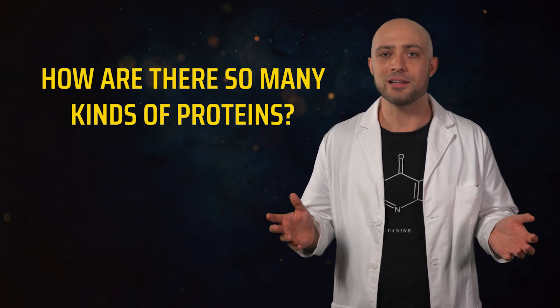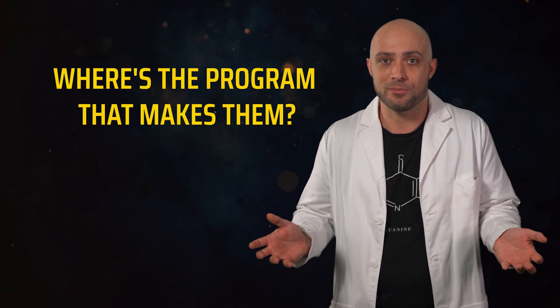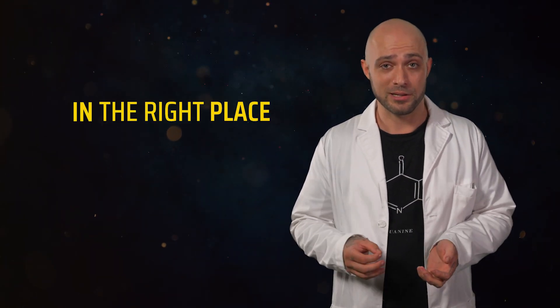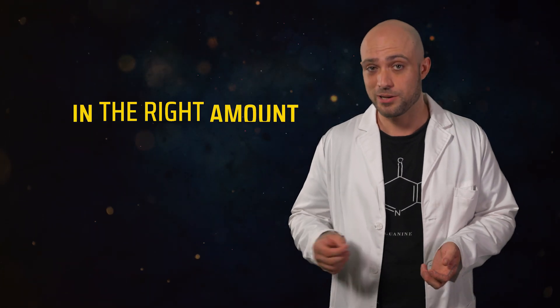Because proteins require the equivalent of a computer program to even make them. But how are there so many kinds of proteins? And where's the program that makes them? Where's that data stored? How can your body be keeping track of the almost 30,000 proteins that make up the human body, and making sure that each one is in the right place, at the right time, in the right amount?